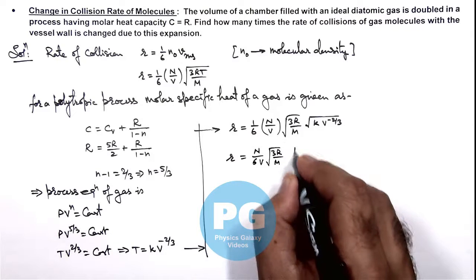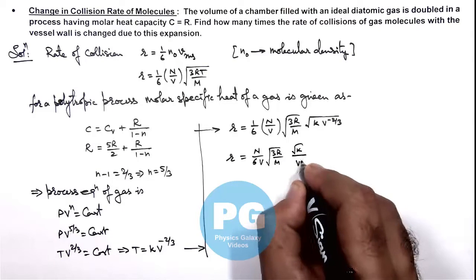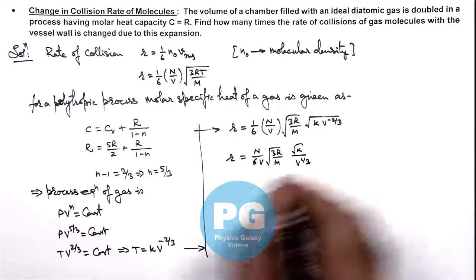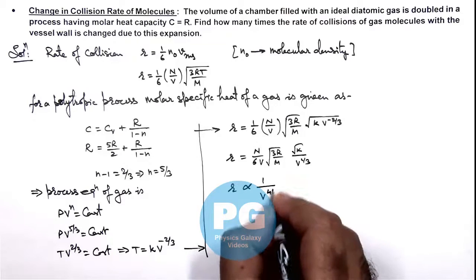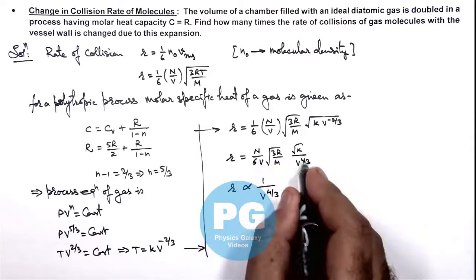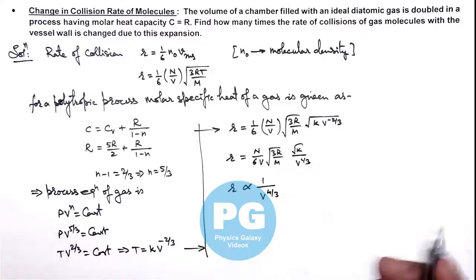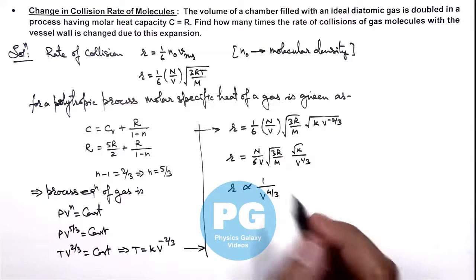root of k divided by v to power 1 by 3, which results the value of r is inversely proportional to 1 by v to power 4 by 3. As other than v and v to power 1 by 3, rest all things are constants. So in this situation if